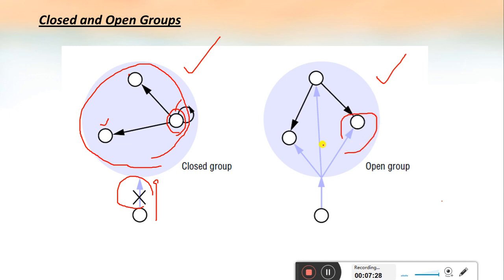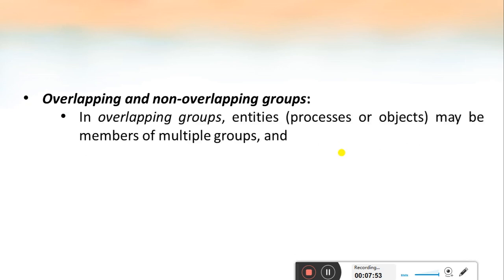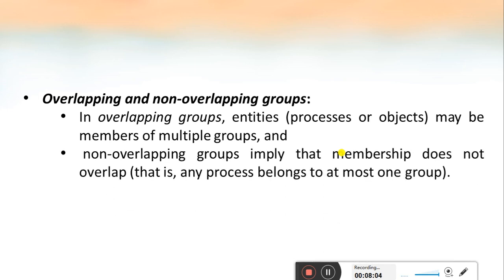In an open group, the processes inside the group can communicate with each other, and any process outside the group can also send a message to the members of this group. Overlapping groups mean a process or object can be a member of multiple groups — more than one group. A non-overlapping group means the membership does not overlap, so any process or object belonging to one group cannot be a member of another group — it can exist in at most one group.